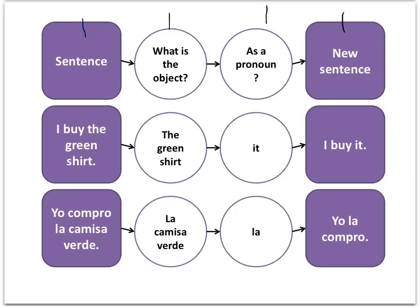I buy the green shirt. What is being bought? That's how you ask yourself in order to find the object of the sentence. What is being affected by this action and not deciding to be a part of it? That's definitely the green shirt — it didn't ask to be bought. So what is being bought? The green shirt. We can replace it with it, and we're going to place it right where the direct object was. That's English. In Spanish, it's going to go in front of the conjugated verb instead.